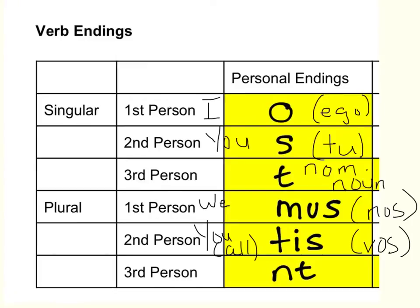NT is what we use for the third person plural. In English, that's understood to be they. And in Latin, that's going to be a plural noun as a subject, or an understood they. You have to know all of these endings and what they mean in order to master this concept.